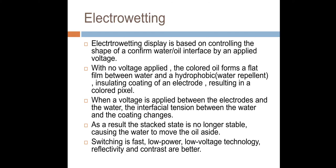Electrowetting technology. Electrowetting display is based on controlling the shape of a conformed water oil interface by an applied voltage. With no voltage applied, the colored oil forms a flat film between water and hydrophobic, hydrophobic means water repellent. When a voltage is applied between the electrodes and the water, the interfacial tension between the water and the coating changes.